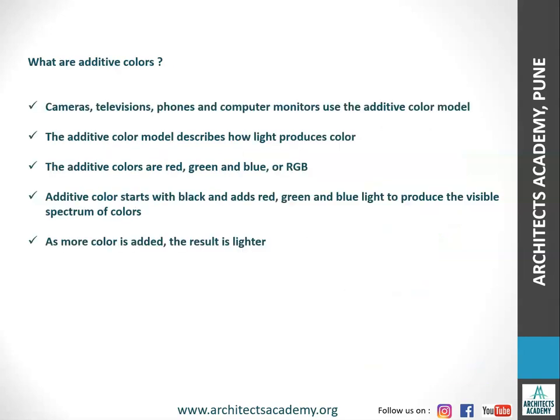Cameras, televisions, phones, and computer monitors use the additive color model. The additive color model describes how light produces color. The additive colors are red, green, and blue — or RGB. Whenever you have an RGB color scheme, it will be an additive color scheme. The additive color model starts with black and adds red, green, and blue light to produce the visible spectrum of colors. As more color is added, the result is lighter.